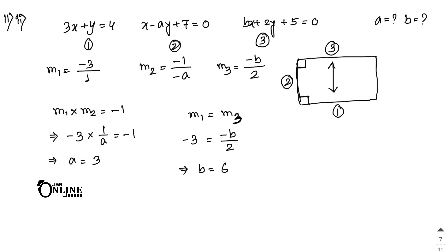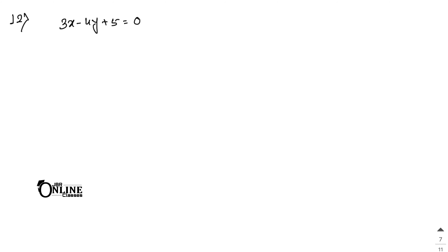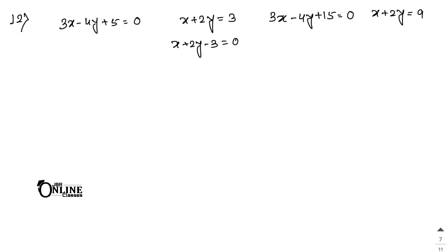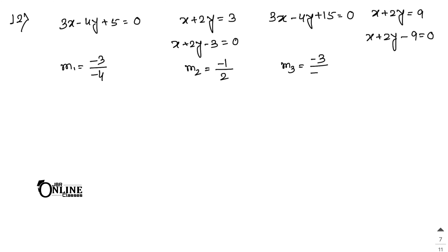Sum number 12: prove that 3x minus 4y plus 5 equal to 0, x plus 2y equal to 3, 3x minus 5y plus 15 equal to 0, and x plus 2y plus 9 equal to 0 form a parallelogram. Find the slopes: m1 equals 3/4, m2 equals minus 1/2, m3 equals 3/4, m4 equals minus 1/2.